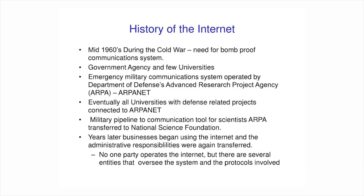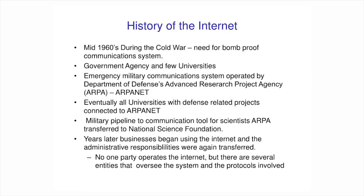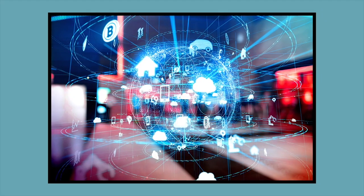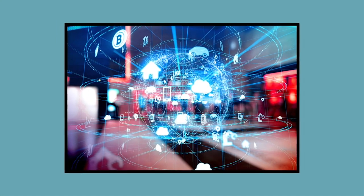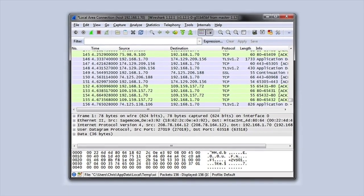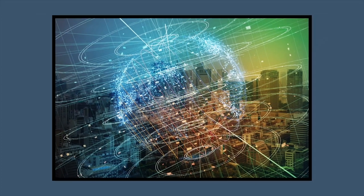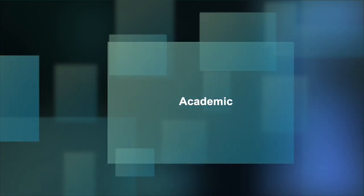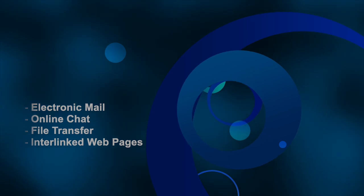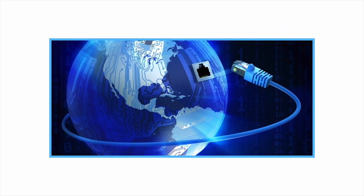A more likely prospect is that new mass media will develop by coupling computers to modern variants of cable television. In fact, experimental media using this technology have already come into use. The Internet is a worldwide publicly accessible network of interconnected computer networks that transmits data by packet switching using standard Internet Protocol, called IP. It is a network of networks that consists of millions of smaller domestic, academic, business, and government networks, which together carry various information and services, such as electronic mail, online chat, file transfer, and the interlinked web pages and other documents of the World Wide Web.